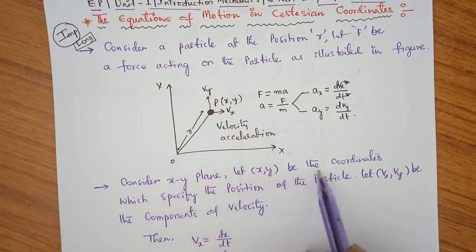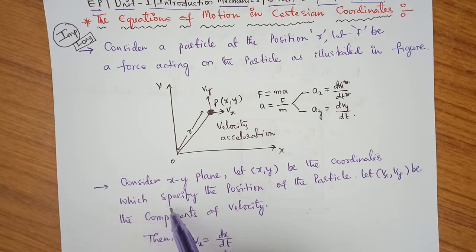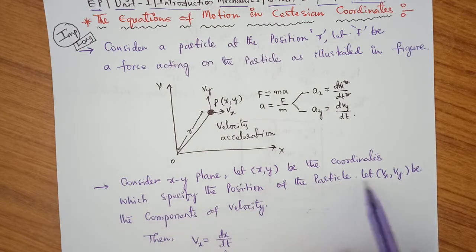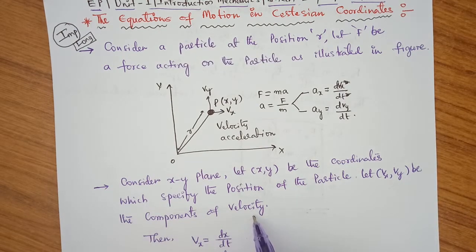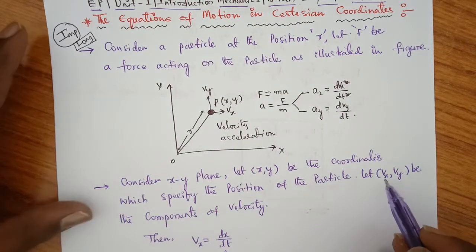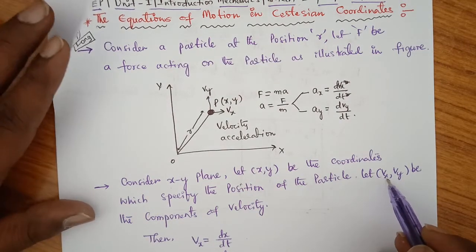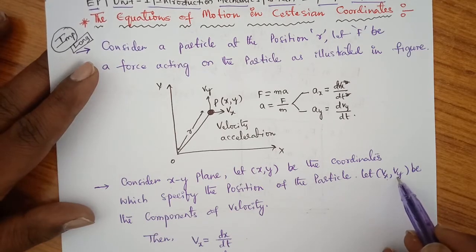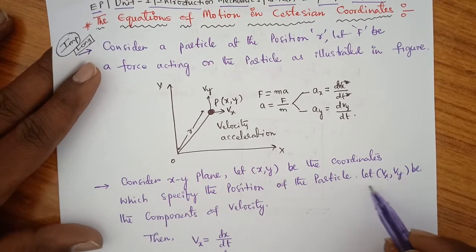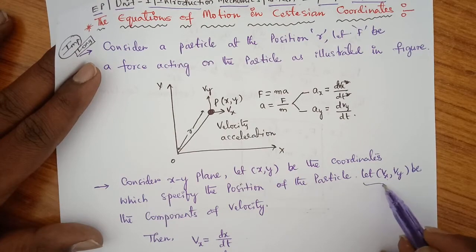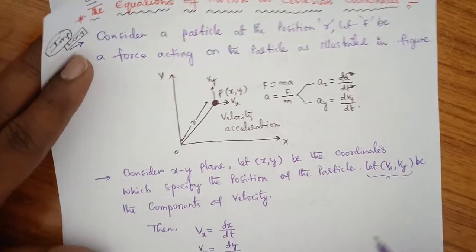Let X comma Y be the coordinates which specify the position of the particle. Let VX comma VY be the components of velocity. VX is the velocity of the particle along the X axis, and VY is the velocity of the particle along the Y axis. This we can write in coordinate form.